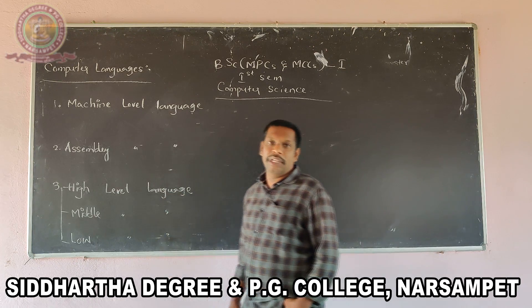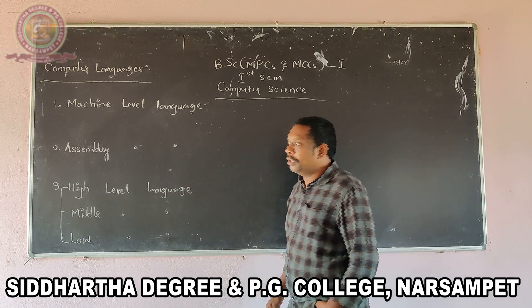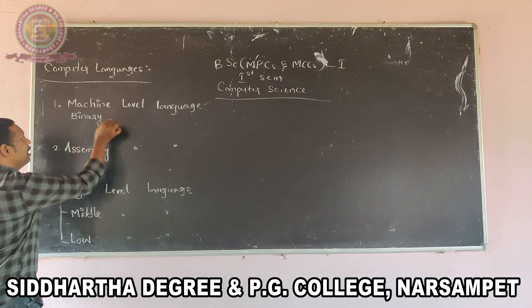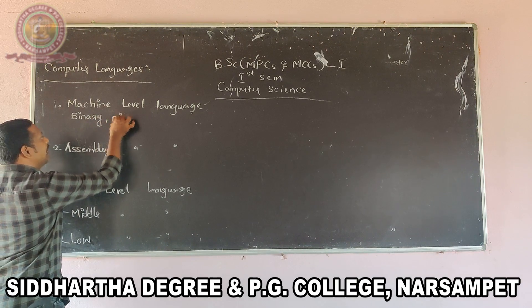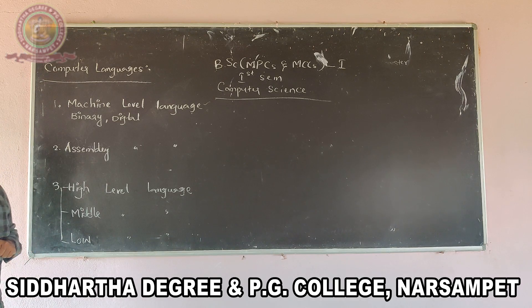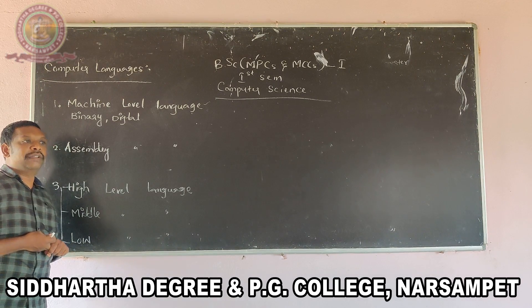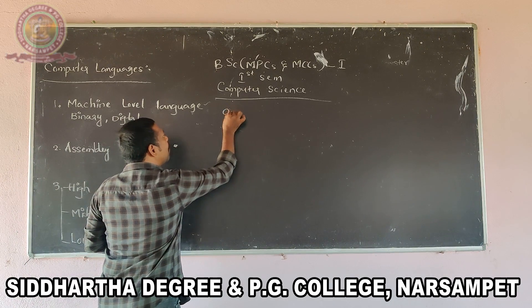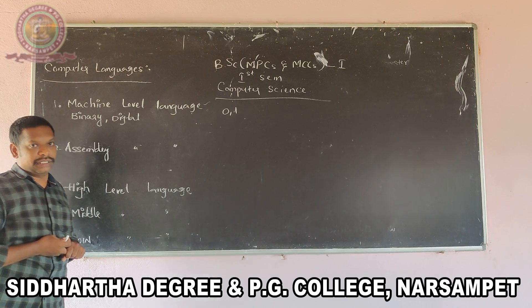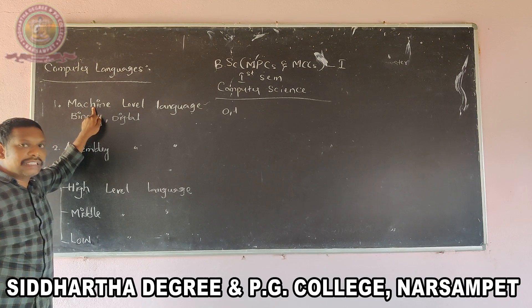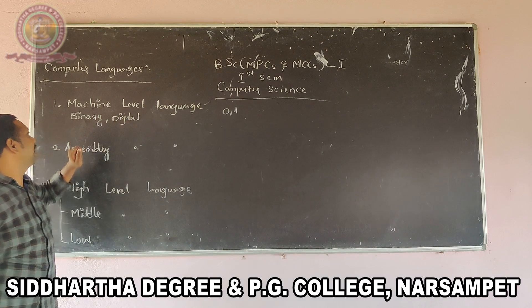First we have to understand machine level language. Machine level language is also called binary language or digital language. Machine means computer. A computer can be understood by only one language, and that language is called machine level language. That language uses 0 and 1, which are binary numbers.